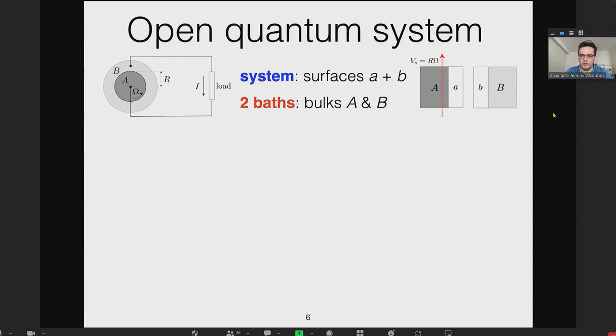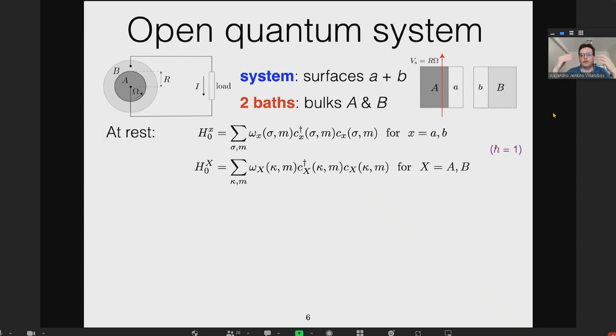Our main result is that if you have two different baths for fermions—in this case electrons—and they're moving with respect to each other, this kind of reasoning gives you a pumping of current from one bath to the other. This is a calculation in the formalism of open quantum systems. The system will be the electrons on the surfaces.